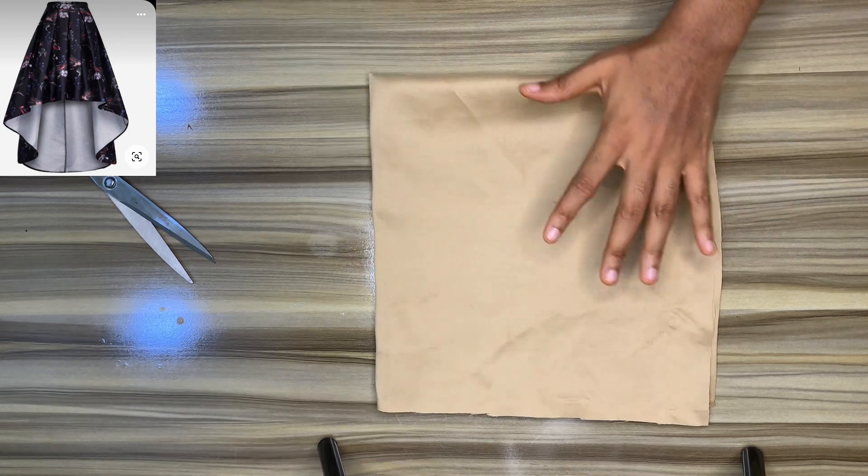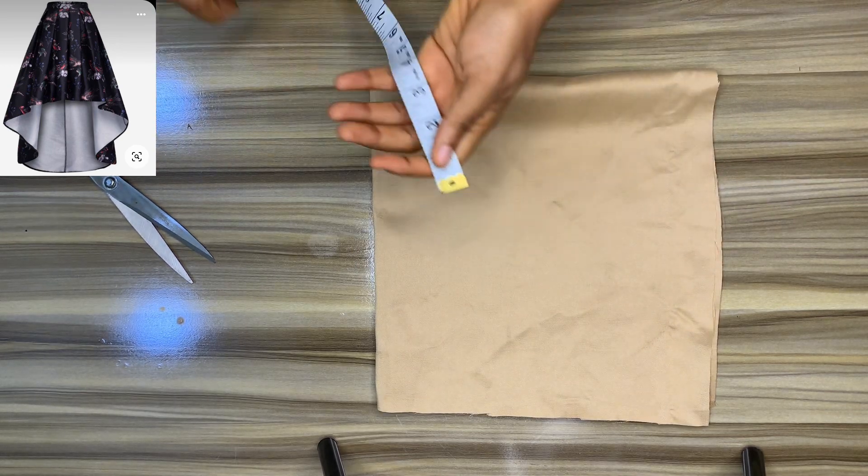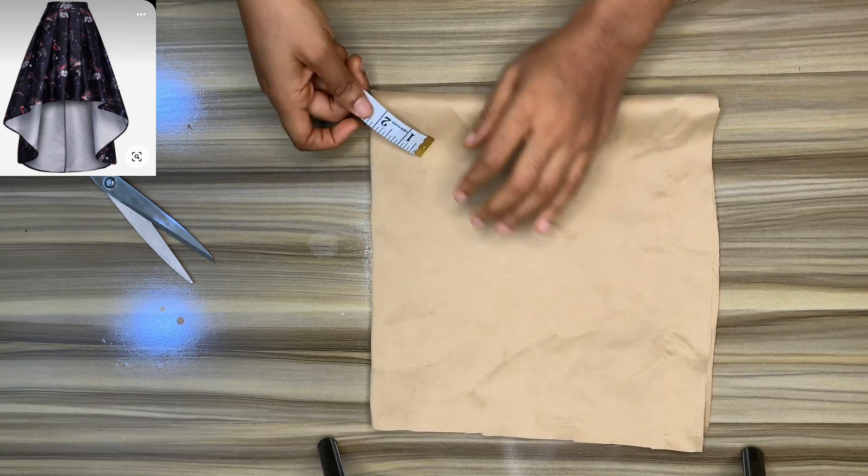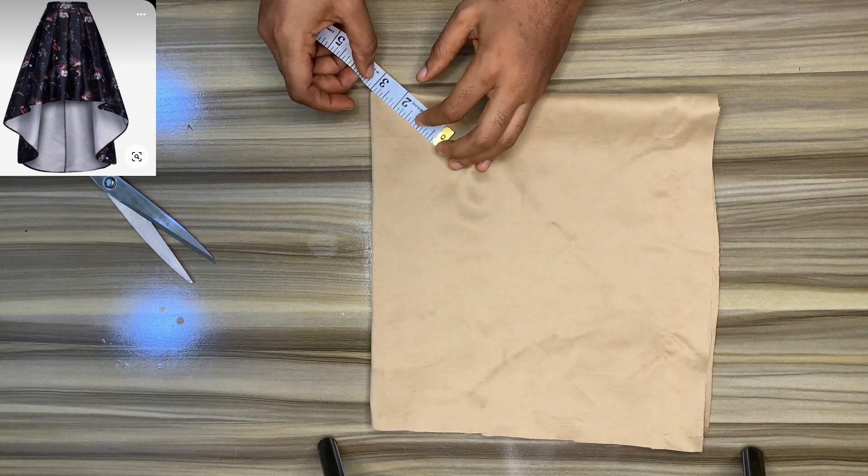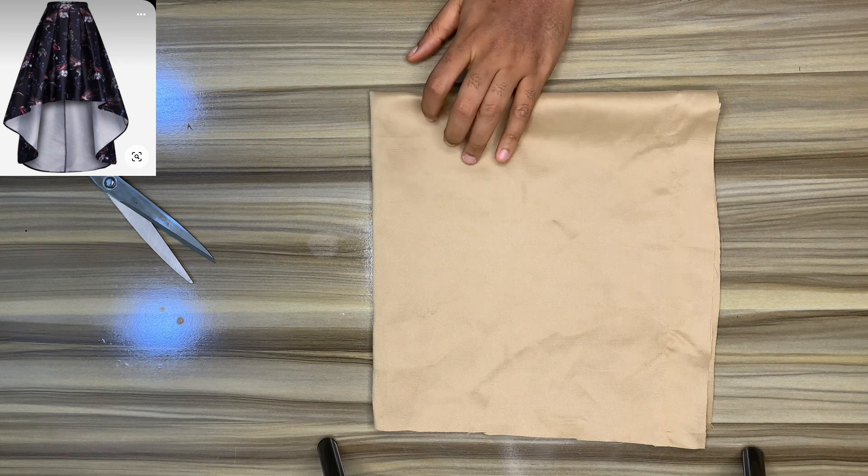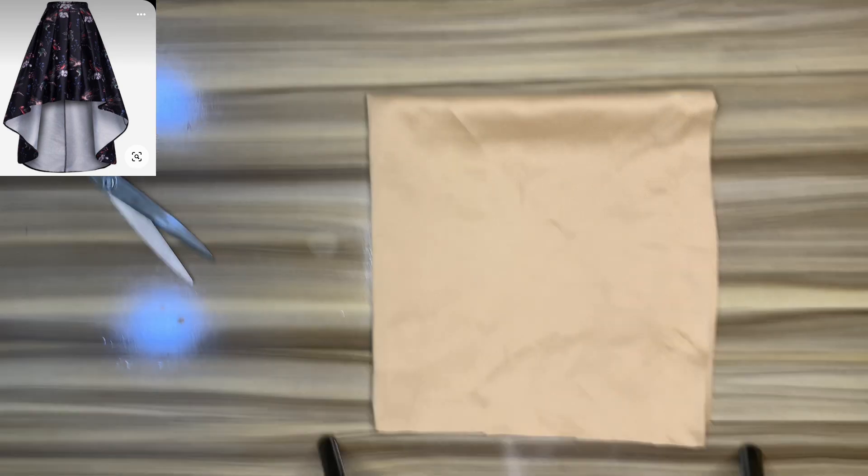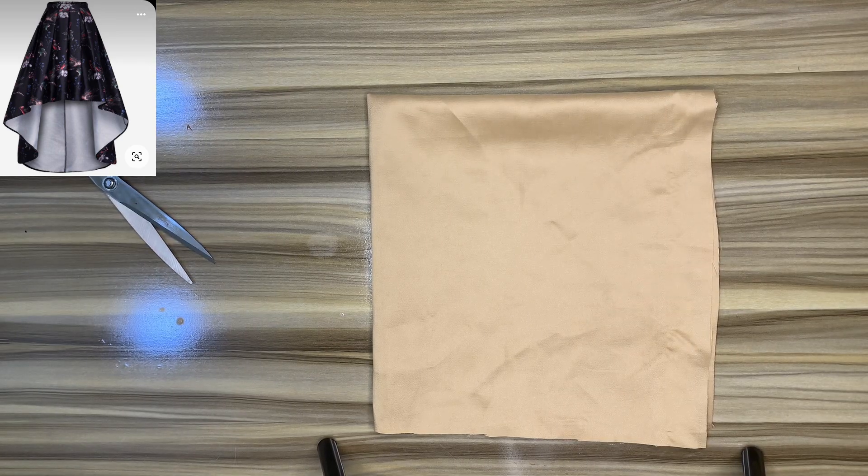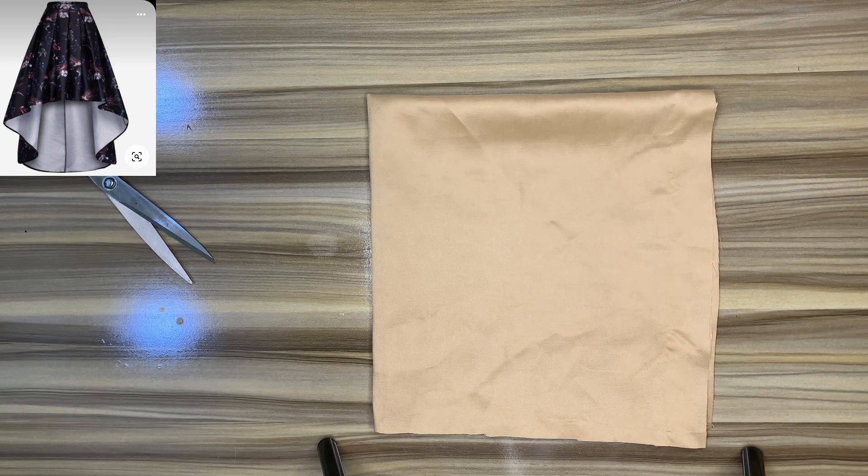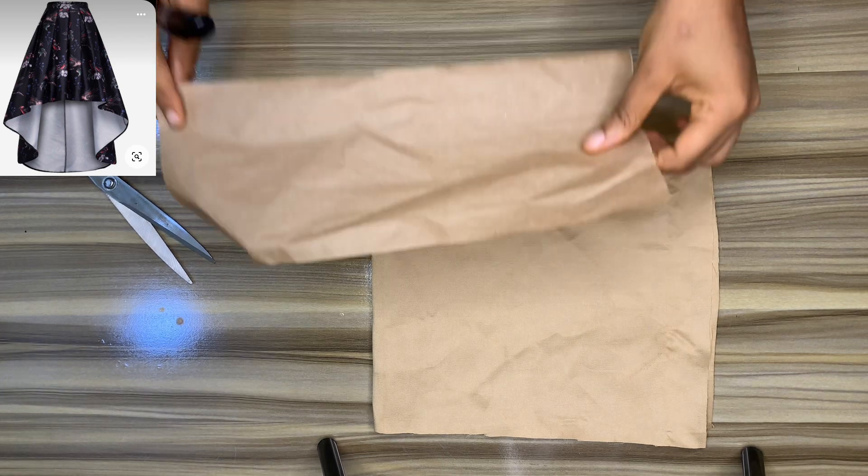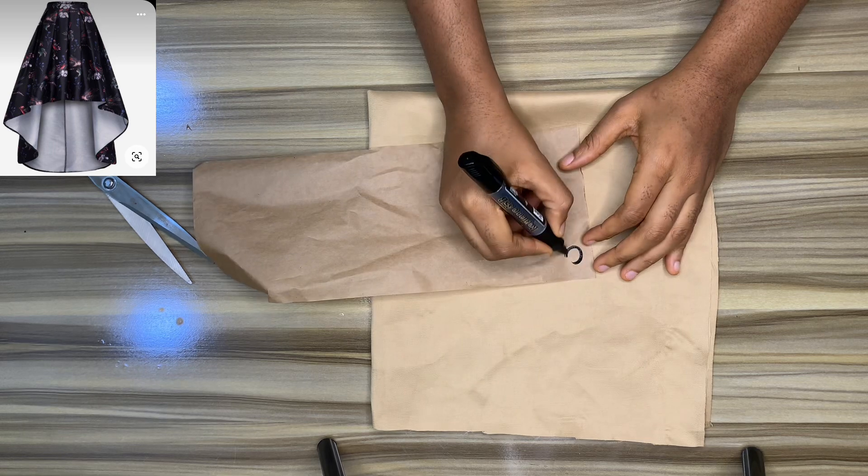We're first going to cut out our circle skirt. To get your radius of a full circle skirt, take the circumference - that's the waist of your client - divided by 6.28, plus 2 inches allowance. That's how you get your radius.